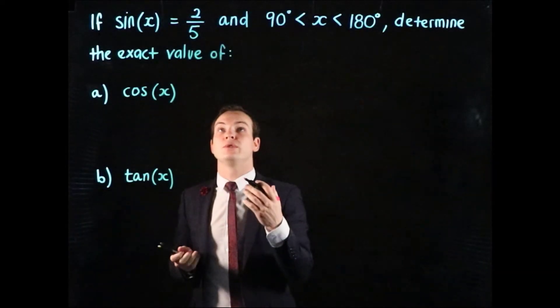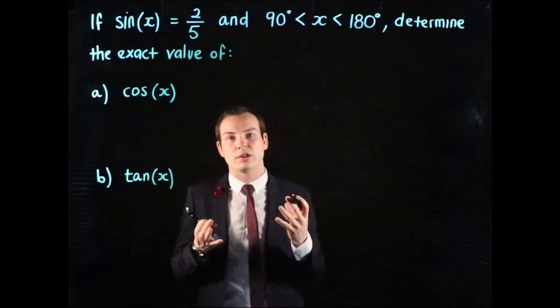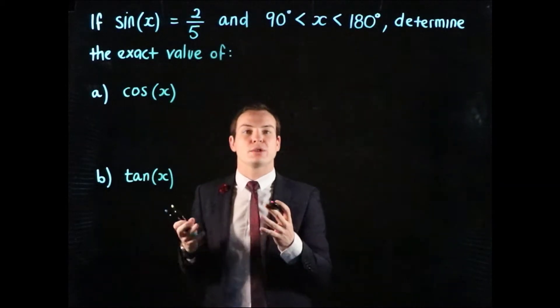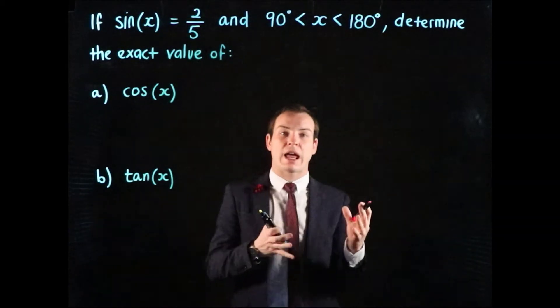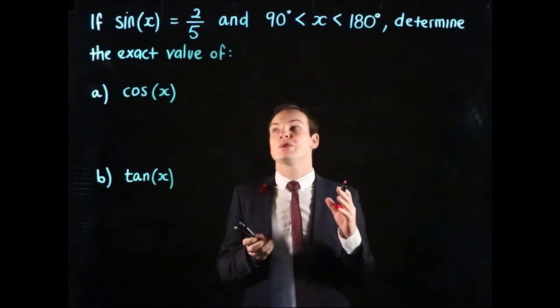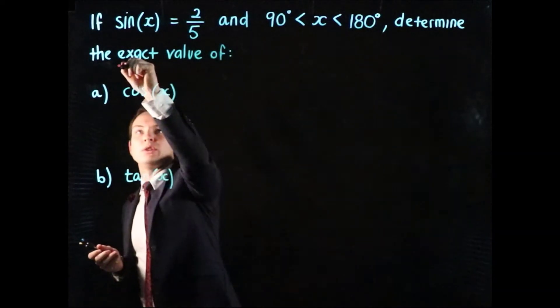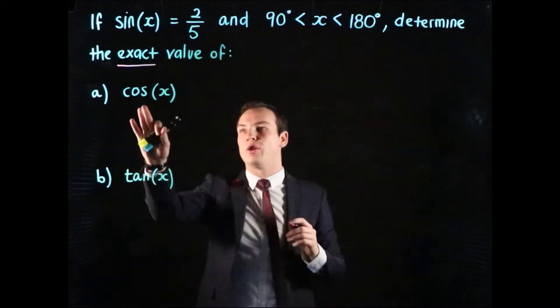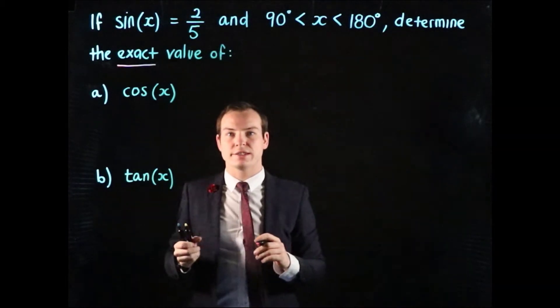If sine of x is equal to 2 divided by 5 and we know that the angle x is between 90 degrees and 180 degrees, we want to determine the exact value of cosine of x and tan of x.